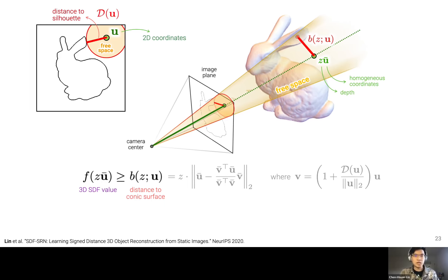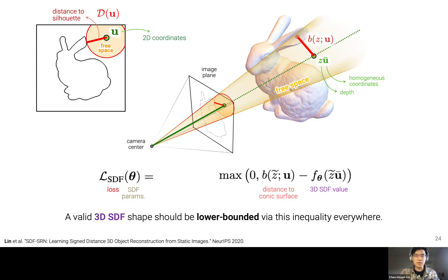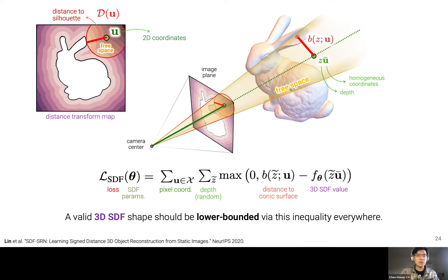This bound has a deterministic expression — the distance to the cone surface — which we write as sb, a function of z and u. For our shape prediction to be valid with respect to observed silhouettes, this inequality must be satisfied for all pixels u at all depth values z. We turn this into a max-margin loss: if the predicted SDF value is less than the given bound, we impose loss; otherwise we leave it as is. We do this for all sampled 3D points and 2D pixels, using efficient distance transform algorithms so all pixels contribute to the SDF supervision.